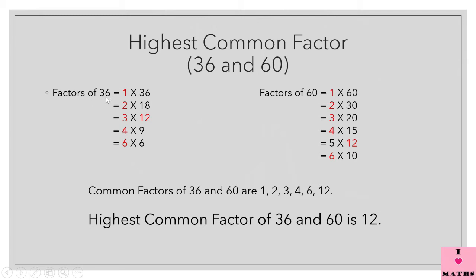Factors of 36: 1 × 36 = 36, so 1 and 36 are factors. 1 and the number itself will always be factors of any number. After 1, we have 2 — this is an even number, so 2 is a factor of 36. 2 × 18 = 36, so 2 and 18 are factors of 36. Now 3: 3 × 12 = 36, so 3 and 12 are also factors of 36.